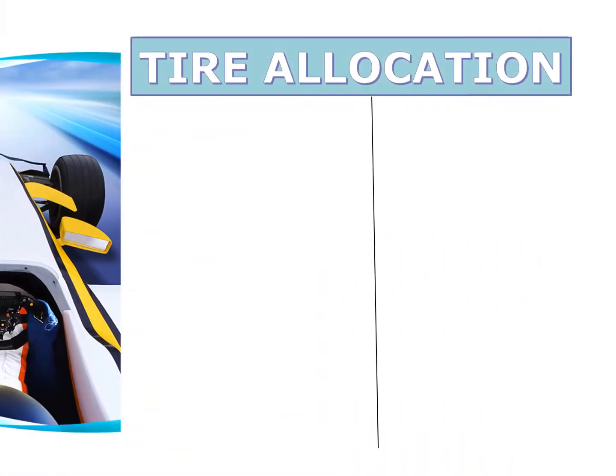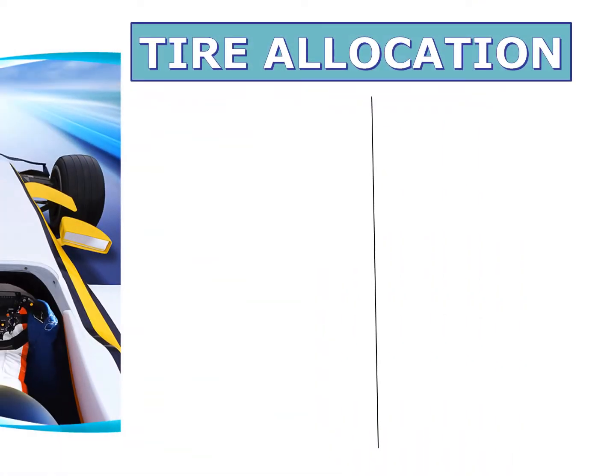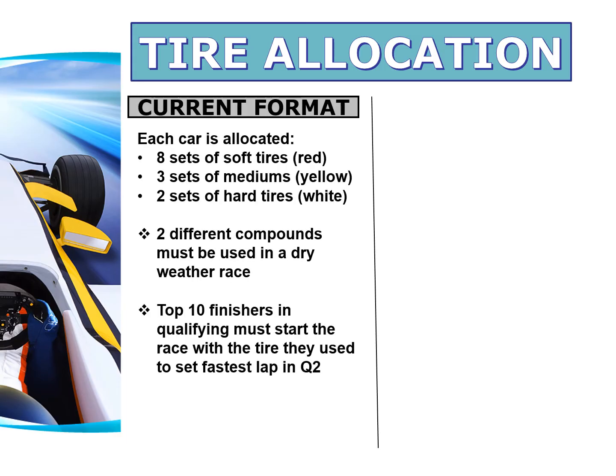Now let's look at rules regarding tire allocation. Under the current format, each car is allocated 13 sets of tires for the race weekend — eight soft, three medium, and two hard. Each car is required to use two different tire compounds in a dry weather race. Top 10 finishers in qualifying must start the race with the same tire they used to set their fastest lap in Q2.